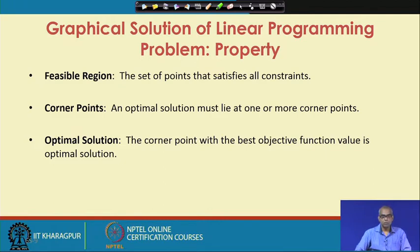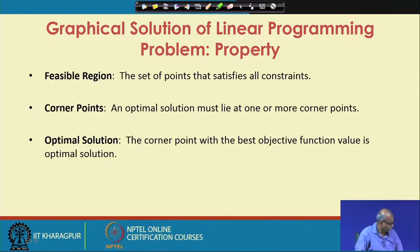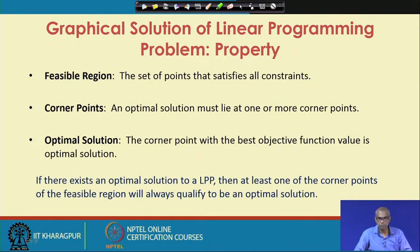From this we learn the following properties of linear programming problems: the set of points that satisfies all constraints is called the feasible region; an optimal solution must lie at one or more corner points; the corner point with the best objective function value is the optimal solution. If there exists an optimal solution, at least one of the corner points of the feasible region will always qualify as an optimal solution.